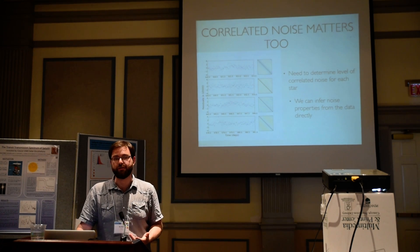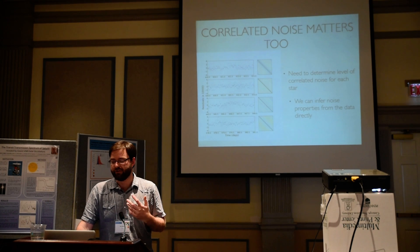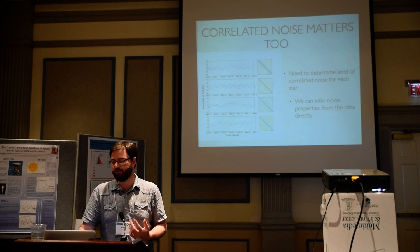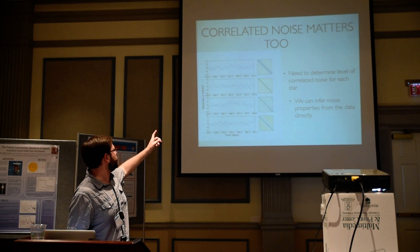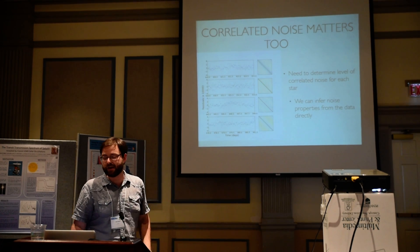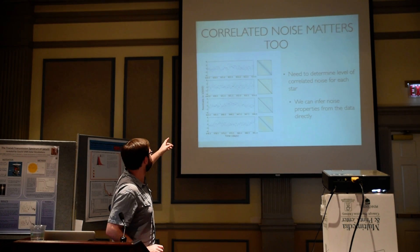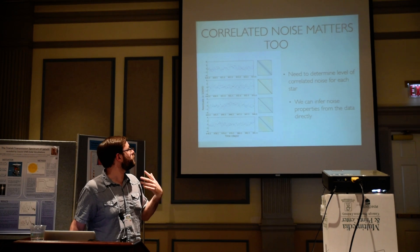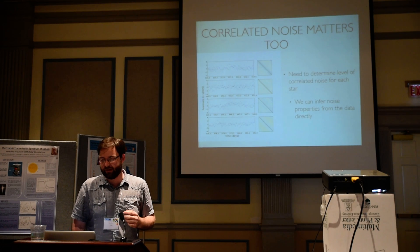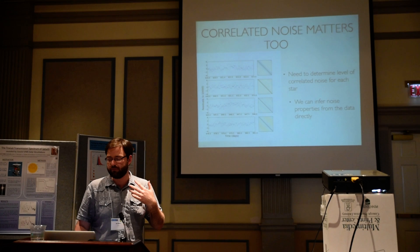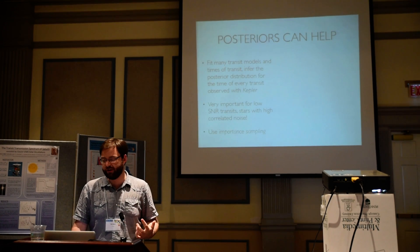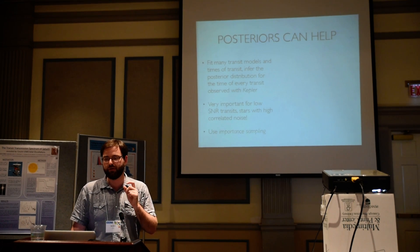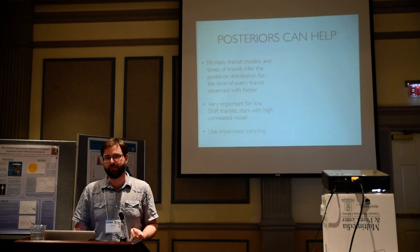The good news is we have a lot of data. Kepler looked at these stars for four years, so there are lots of observations of the star when there's no transit going on — you know exactly what the star is doing. We can look at pseudo-random times of observation and visualize the correlated noise structure. If you do this many times, you can infer the average covariance structure for the star and use that in the analysis. We can then build not just times of transit, but transit timing posterior distributions for every transit in Kepler.